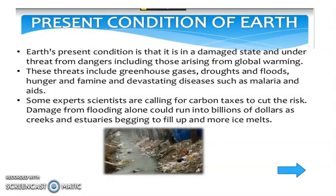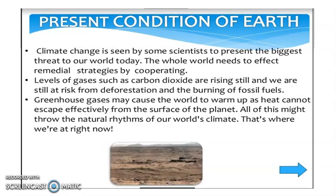Earth's present condition is that it is in a damaged state and under threat from dangers, including those arising from global warming. These threats include greenhouse gases, droughts and floods, hunger and famine, and devastating diseases such as malaria and AIDS. Some scientists are calling for carbon taxes to cut the risk. Climate change is seen by some scientists to present the biggest threat to the world today, and we have to handle it.